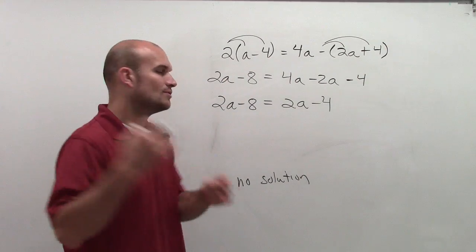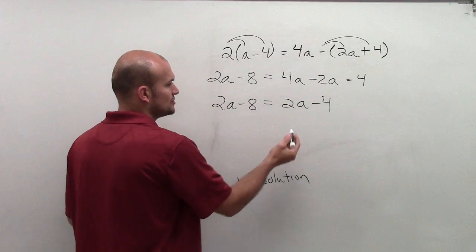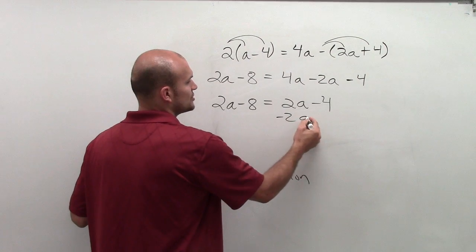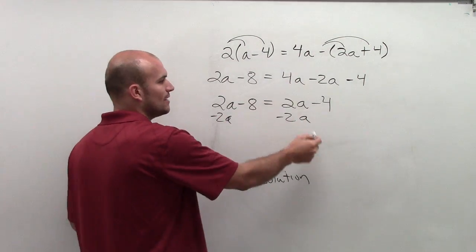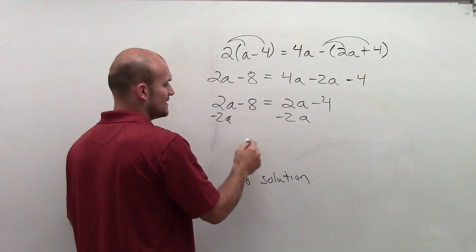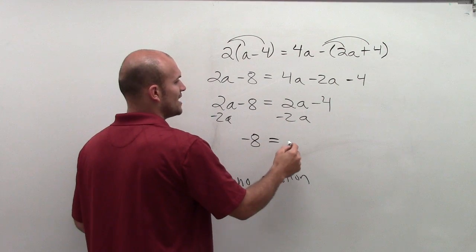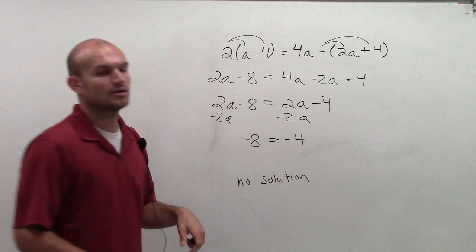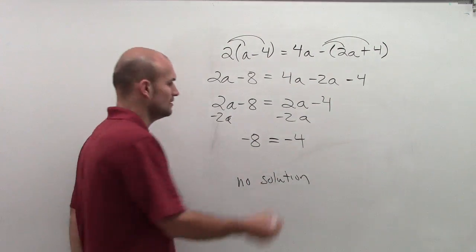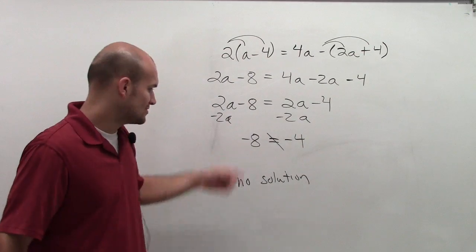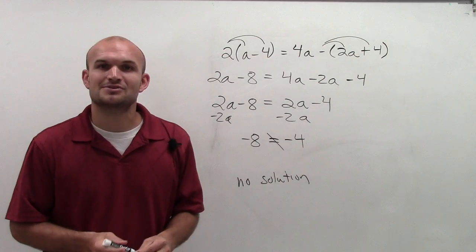But I just want to make sure to show you how you can always verify you're doing that correctly. So what you could do is get your variables on the same side. So you subtract 2a, and what you'll notice is that's going to go to 0 and that's going to go to 0. And what you have is negative 8 equals negative 4, which obviously is not equal. So since those are not equal to each other, we are going to have no solution.